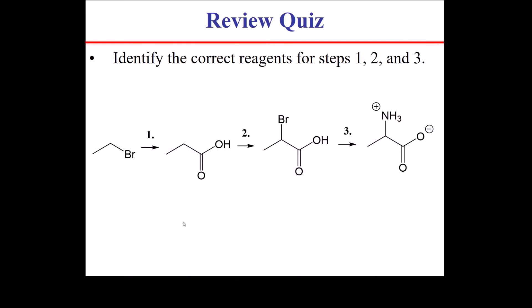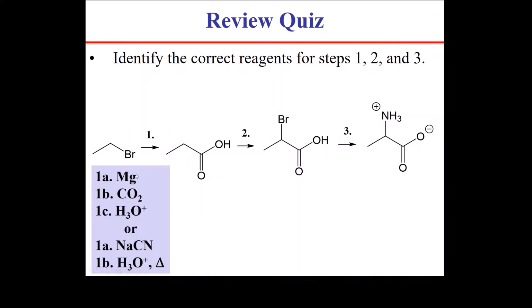In the first step of this synthesis, there are two different ways of converting an alkyl halide into a carboxylic acid while simultaneously adding a carbon to your compound. The first one is by turning your alkyl halide into a Grignard reagent, then plugging the Grignard into an electrophilic carbon dioxide, and then capping off the carboxylate with a proton by doing an acidic workup. Alternately, you could use sodium cyanide as a nucleophile in an SN2 reaction to bump off the bromide, and then hydrolyze the cyanide all the way to a carboxylic acid using heat.